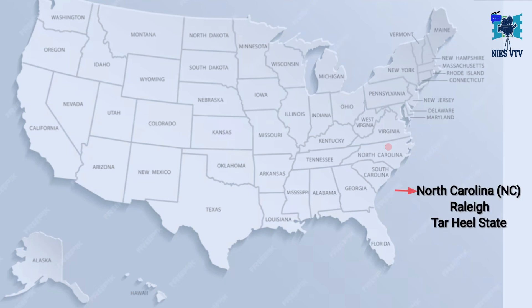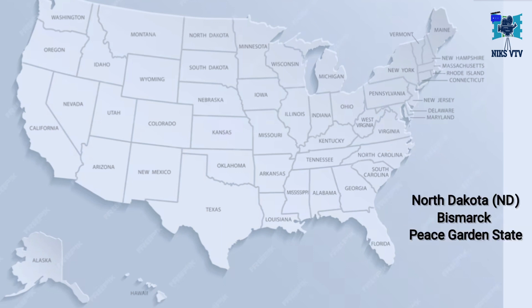Next state is North Carolina, NC is its abbreviation, capital is Raleigh, its time zone is EST, and its nickname is Tarheel State. Next state is North Dakota, ND is its abbreviation, its capital is Bismarck, its time zone is CST, and its nickname is Peace Garden State.